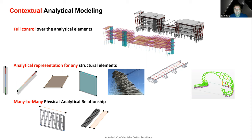We will be able to build an analytical representation for any kind of objects, not just beams, braces, columns, floors, and similar elements. Any kind of object or group of objects will be able to have a representation in the analytical environment. We call this the many-to-many physical-analytical relationship. Not only a single element, but a group of elements will be able to share an analytical representation — for example, a truss represented as a system of analytical members, or a stair as a slanted panel.